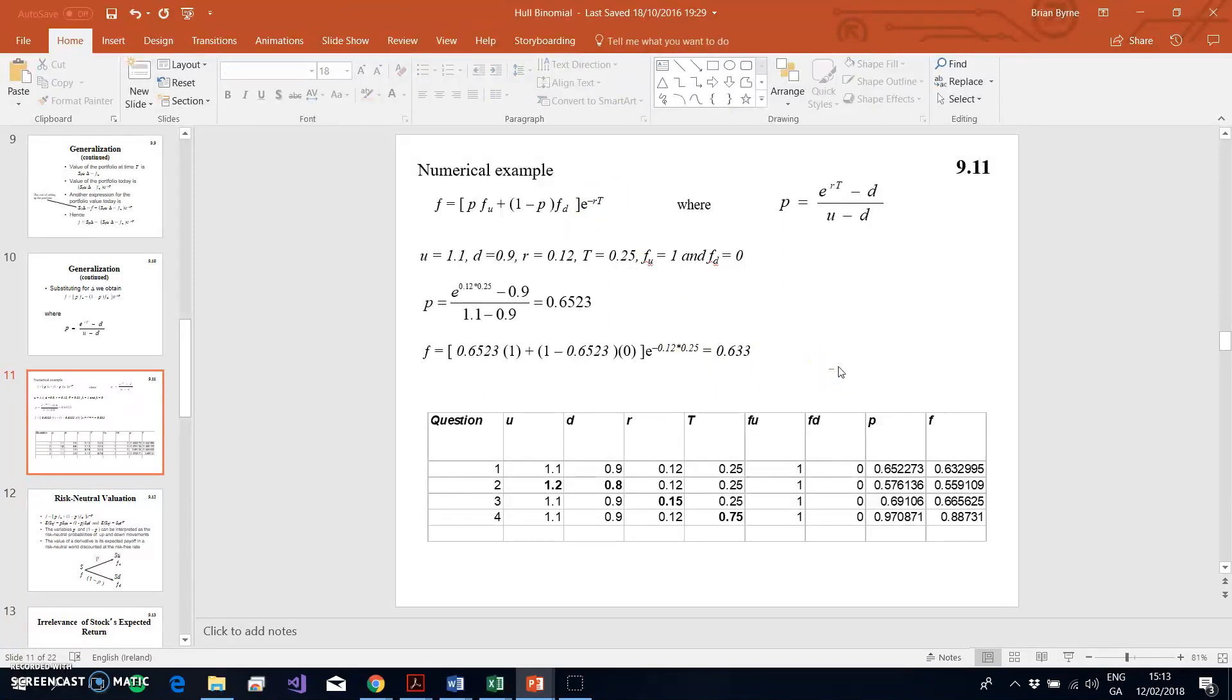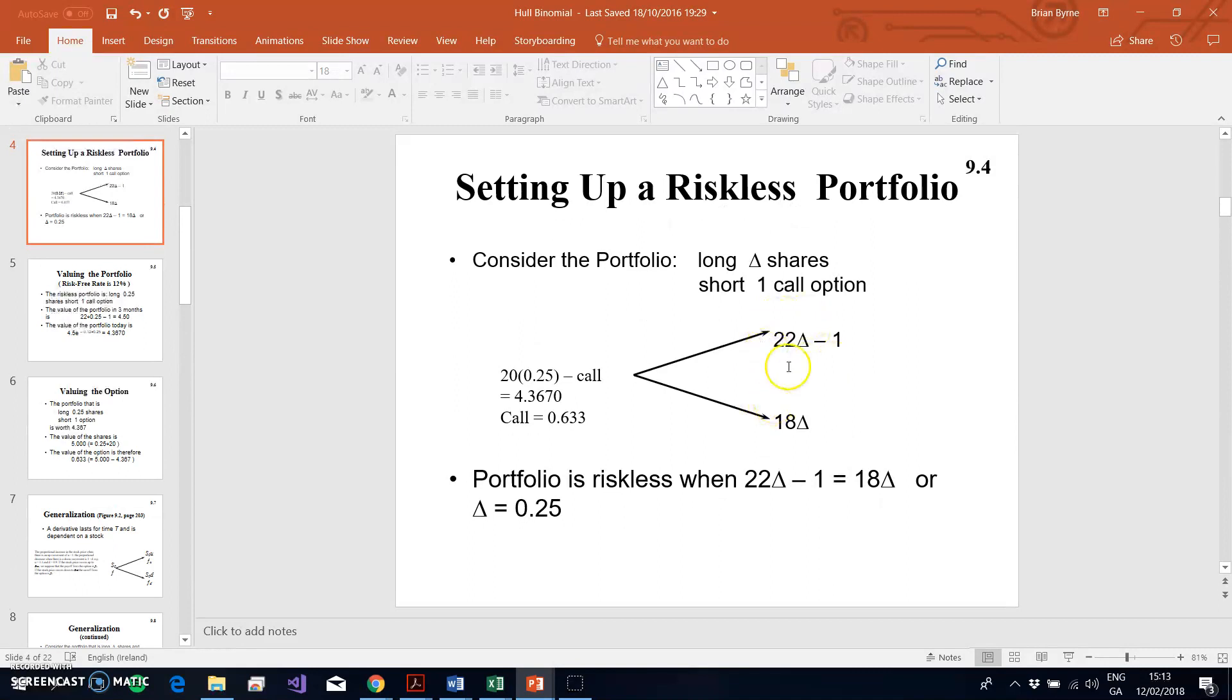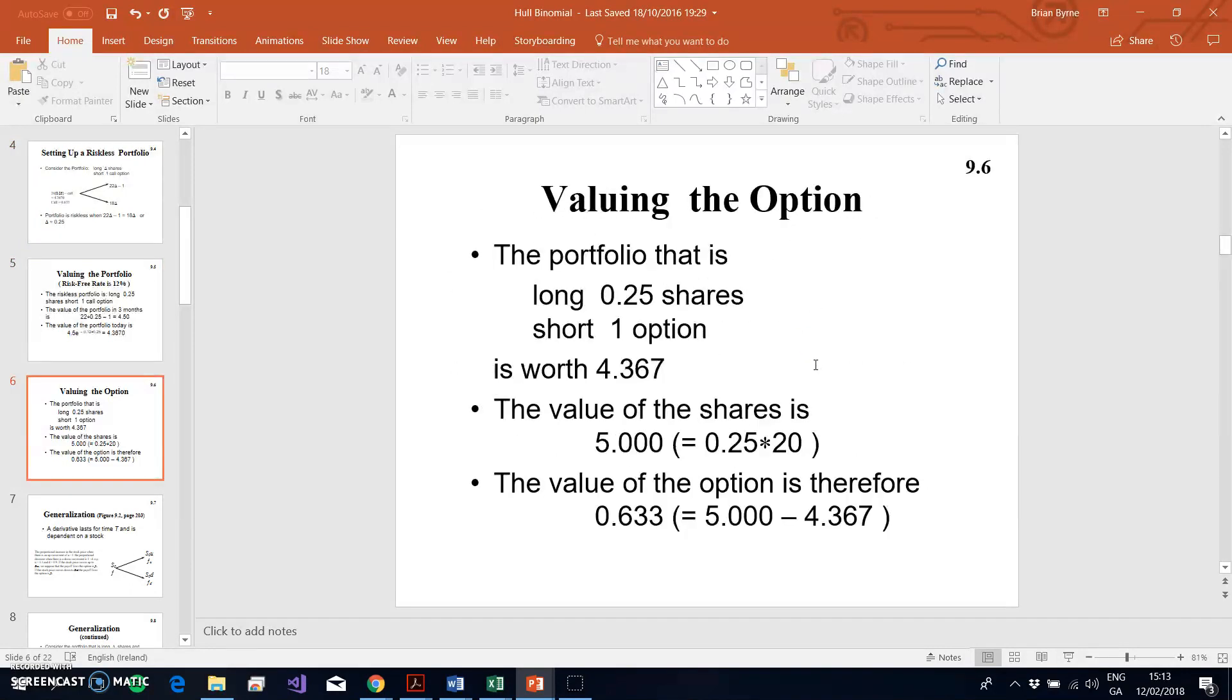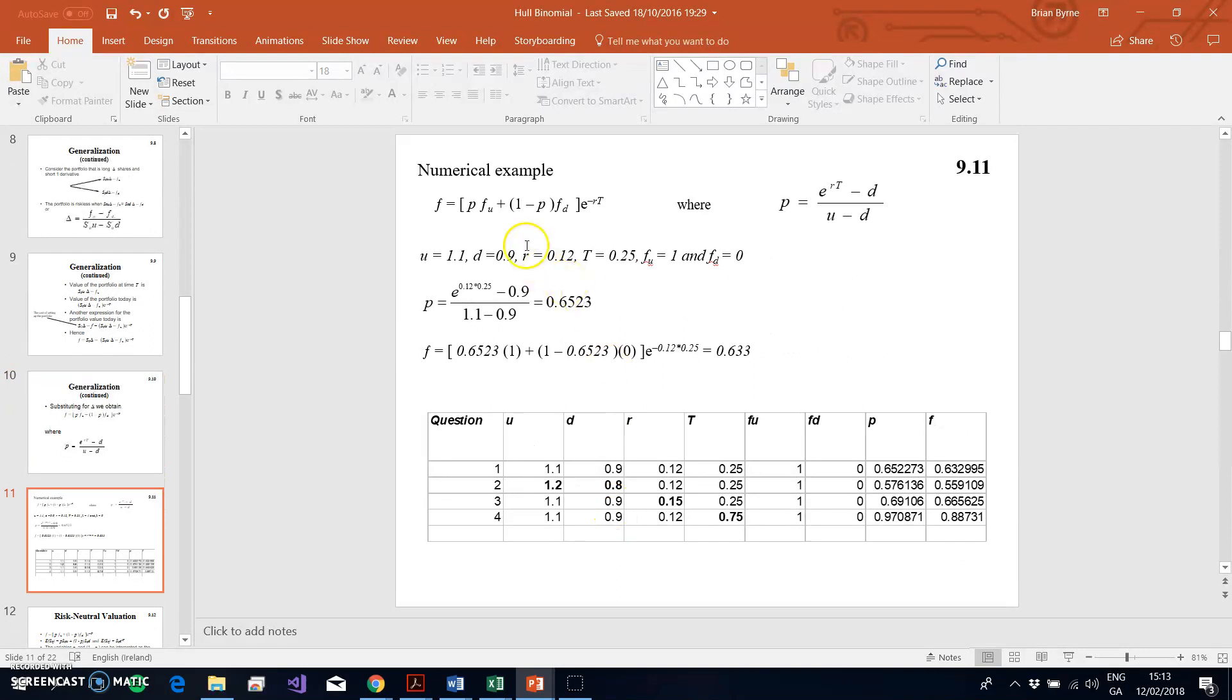Instead of using the no-arbitrage approach, which is really outlined here - we set two portfolios to equal each other and say there shouldn't be any possibility to generate supernormal profit - this no-arbitrage approach that results in a value of 63 cents can also be estimated using a risk-neutral approach where we apply the risk-neutral probability and this backward induction formula, and we recover the same value for the call option.